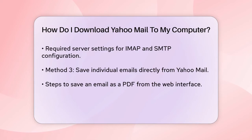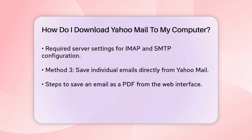Once you've set this up, the email client will sync your Yahoo Mail, allowing you to access your emails offline. Saving individual emails. If you only need to save specific emails, you can do so directly from the Yahoo Mail web interface. Open the email you want to save, click on the More menu, and select Save as PDF. Choose a location on your computer and click Save. This method is straightforward but works best for saving individual emails rather than bulk downloads.